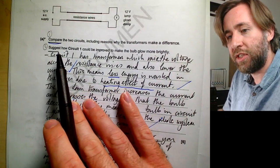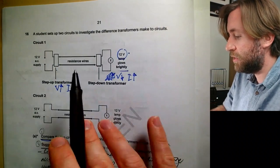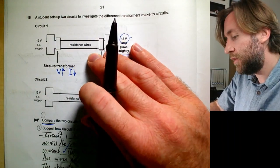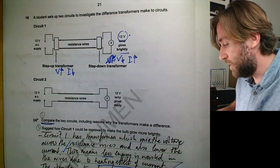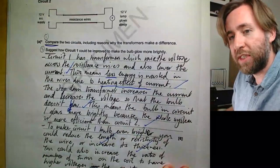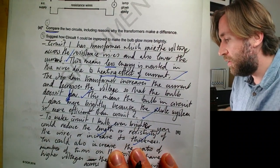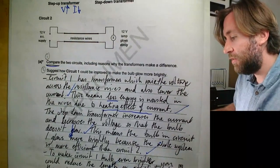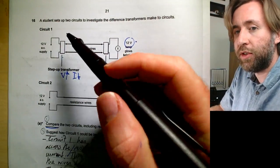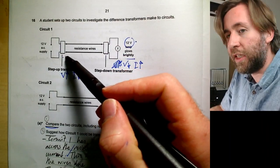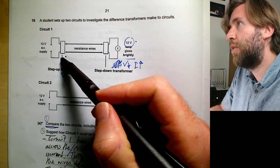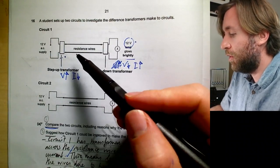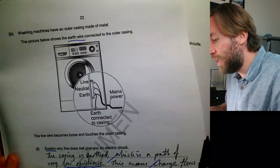The second paragraph covers other ways to improve circuit one. You can make the resistance wires shorter — length is proportional to resistance, so decreasing resistance increases efficiency. You could also use a lower resistivity material, increase the thickness of the wires for lower resistance, or increase the ratio of secondary to primary turns in the step-up transformer to achieve an even lower current and therefore an even more efficient system.